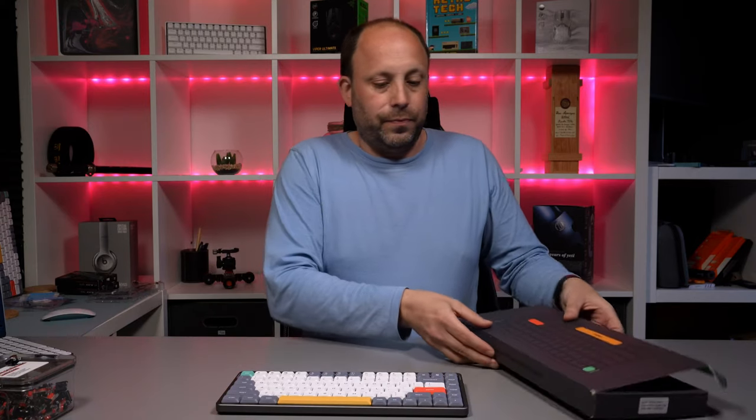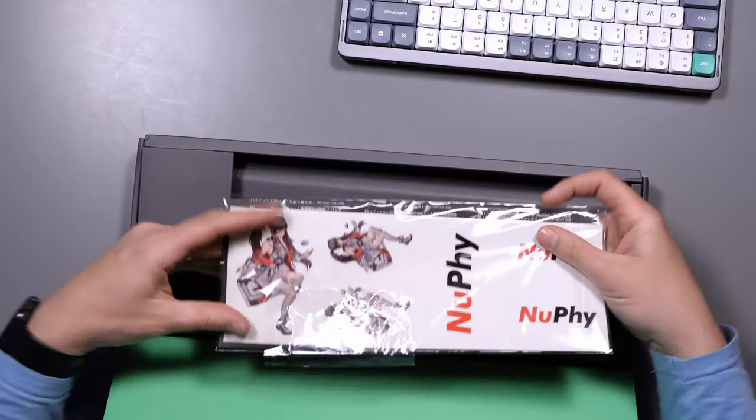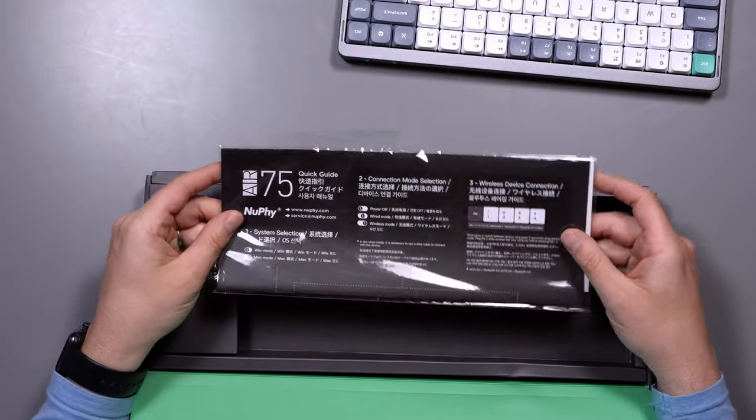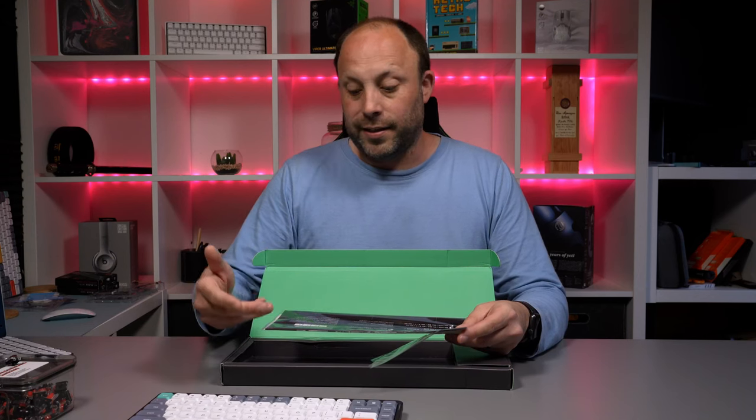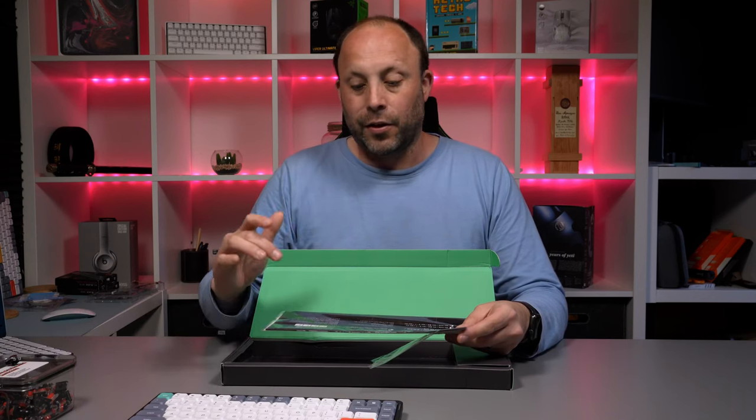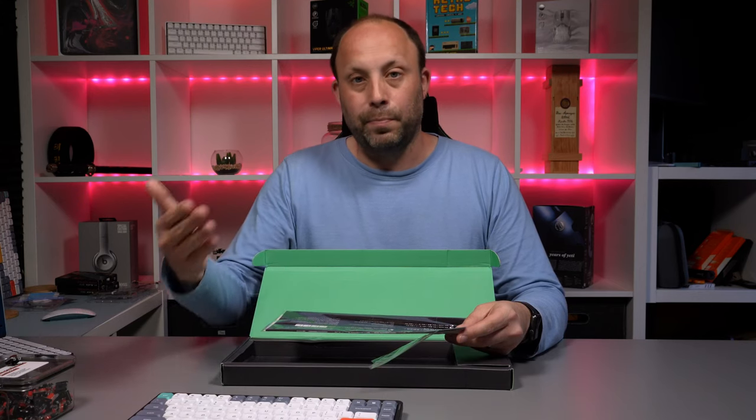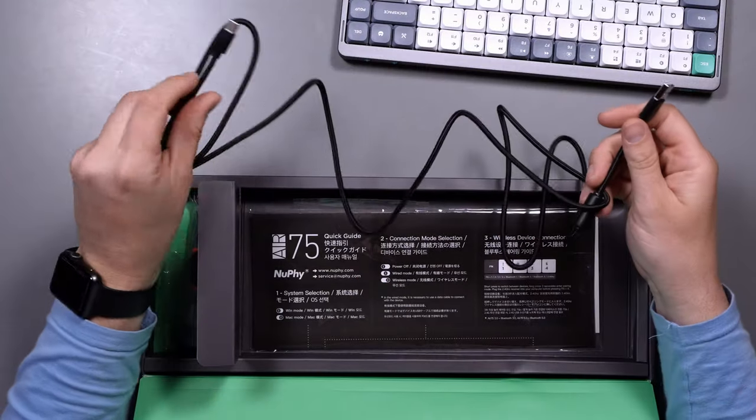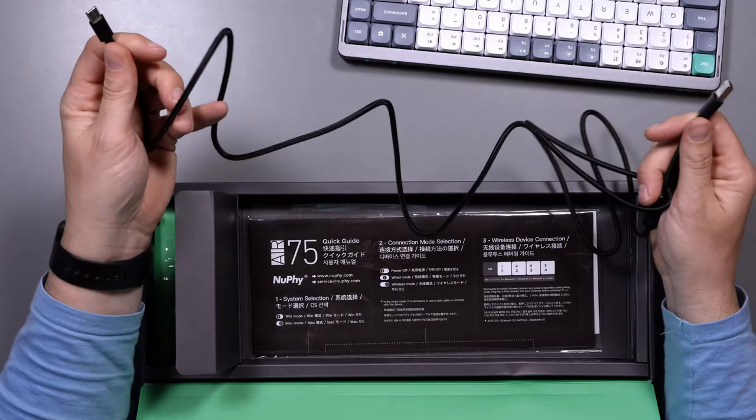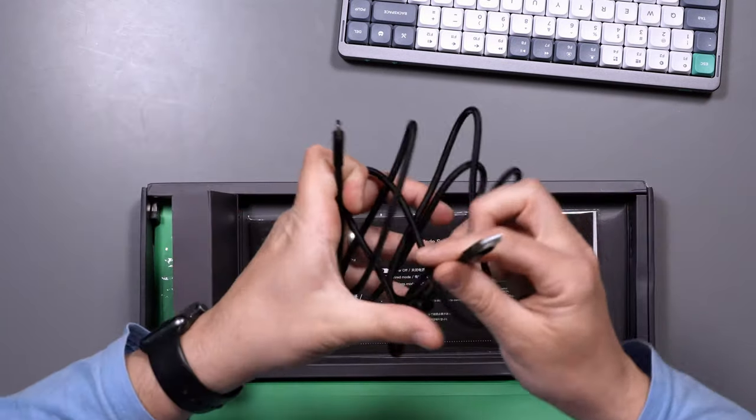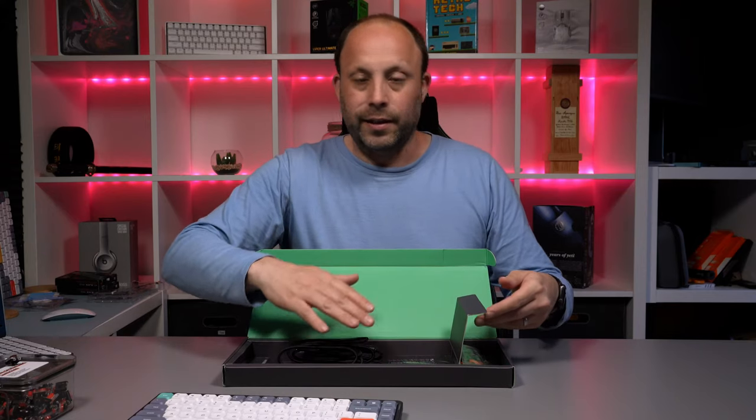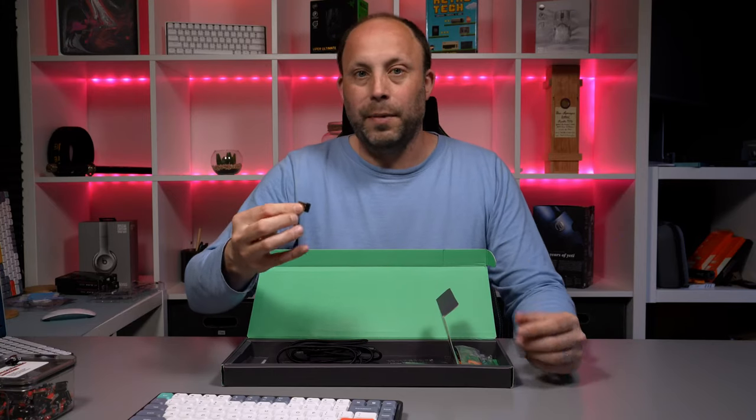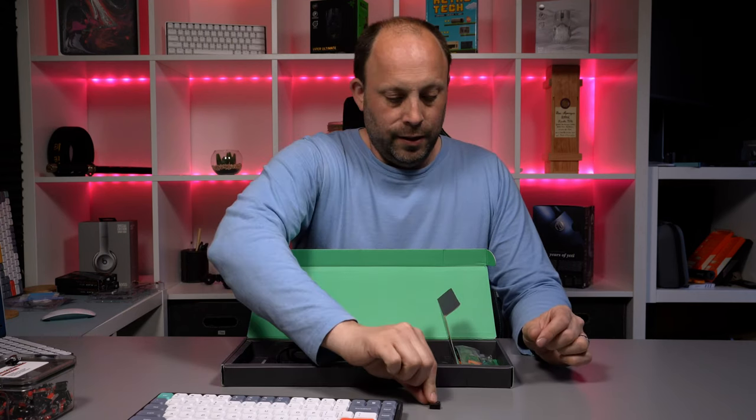Now also in the box we've got our Nufi stickers and some instructions. And you are going to need to read this because it can be configured for multiple devices and different ways of connecting to the keyboard. So there are certain hotkeys you're going to need to use to connect it, whether it's Bluetooth or the dongle or the wired mode. Then we've got our USB to USB-C cable. So you can plug it to your PC and then directly into the actual keyboard itself. So that can be for charging or for connecting it so that you can use it wired. We've got a 2.4 gigahertz dongle. So if you want to use it with a strong wireless connection, maybe your Bluetooth isn't great or you don't have Bluetooth on your PC, you've got that option.